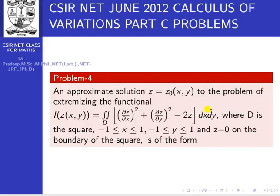Dear friends, today we are going to discuss June 2012 Part C problem 4 in the calculus of variations — a really important problem. We need to find an approximate solution z = z₀(x, y) to the problem of extremizing the functional I[z] = double integral over domain D of (∂z/∂x)² + (∂z/∂y)² − 2z dx dy, where D is the square −1 ≤ x ≤ 1, −1 ≤ y ≤ 1, and z = 0 on the boundary.